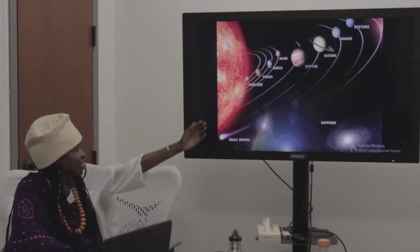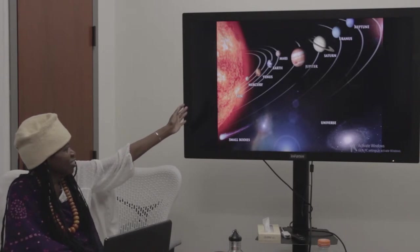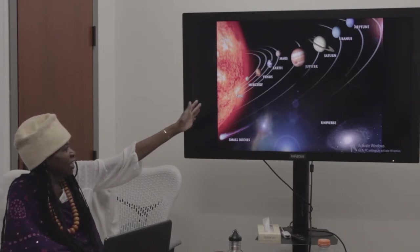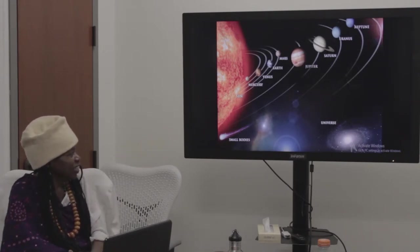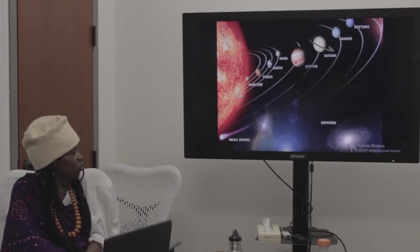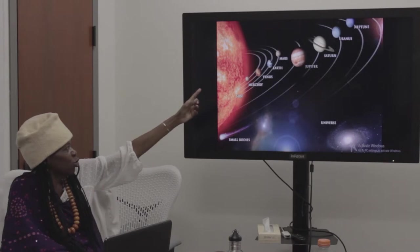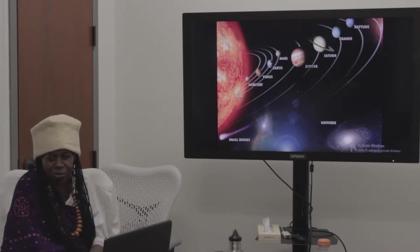Here we are, Earth. We got the Sun, and we're looking at our solar system as part of our universe. Here we are, Earth, and we're in between two planets, Venus and Mars.